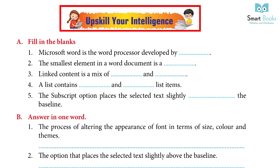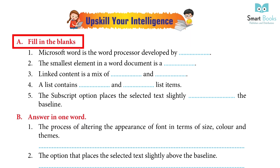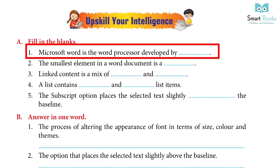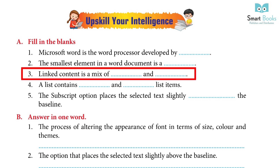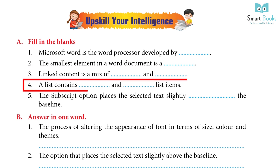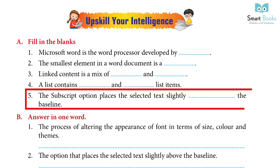Upskill Your Intelligence. Fill in the blanks: 1. Microsoft Word is the word processor developed by — Answer: Microsoft Corporation. 2. The smallest element in a word document is a — Answer: Character. 3. Linked content is a mix of — and — Answer: Paragraphs and characters. 4. A list contains — and — list items. Answer: Ordered and unordered. 5. The subscript option places the selected text slightly — the baseline. Answer: Below.